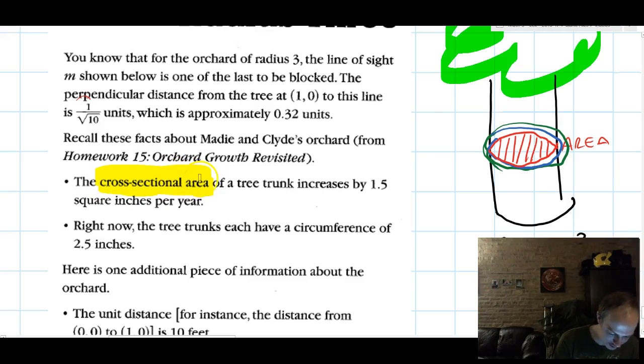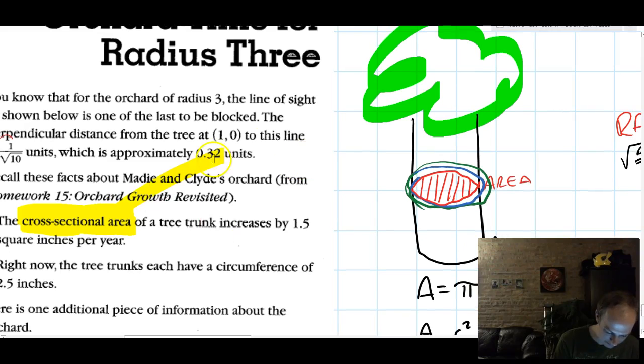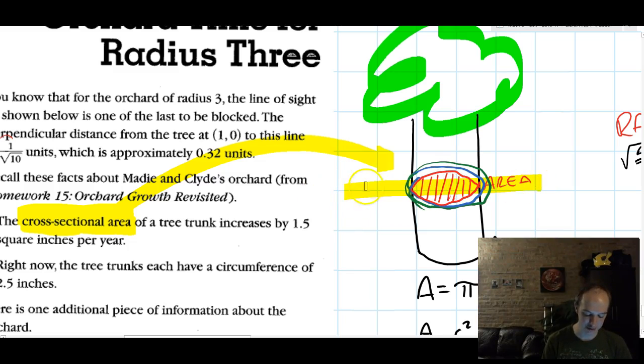The cross-sectional area is talking about the area of a cross-section. That is, you cut this tree, take a slice out of the tree, and measure that area of that circle.